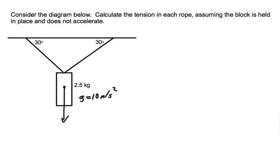So the weight down is going to be 25 newtons. That's 2.5 times 10. So it's being pulled down by 25 newtons.